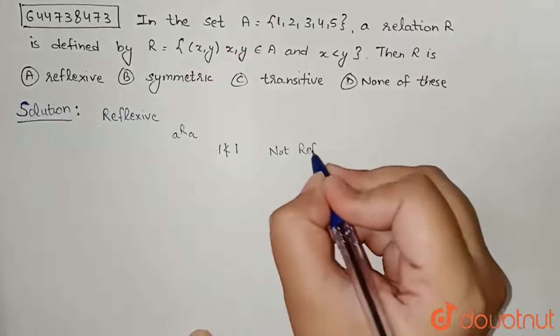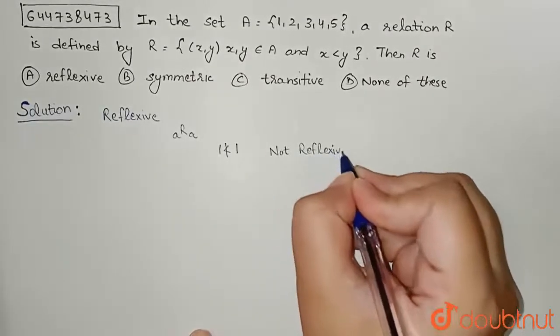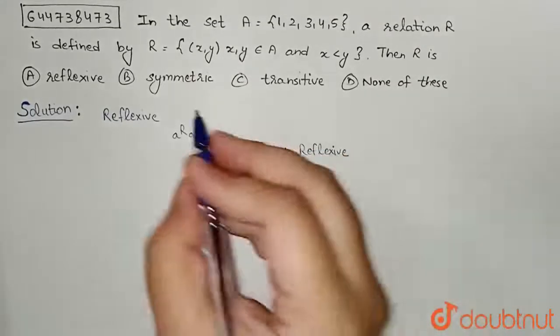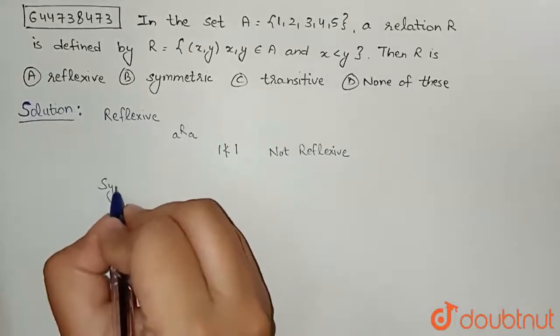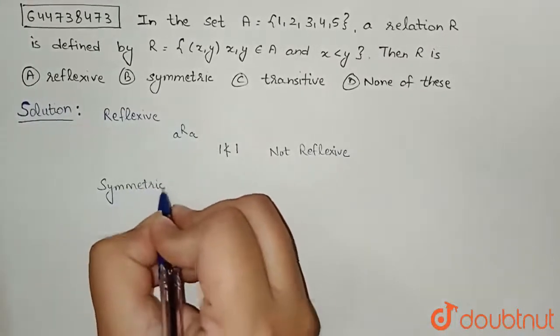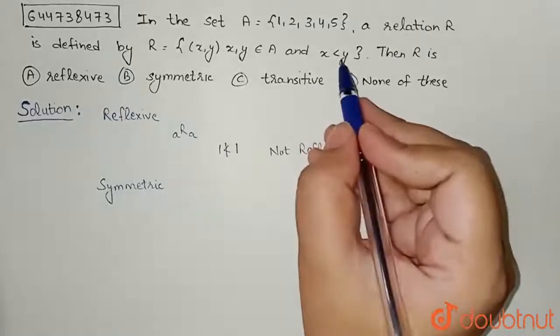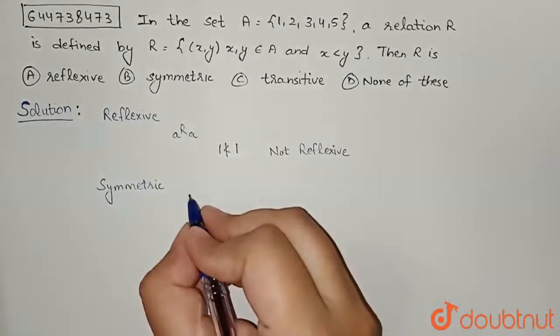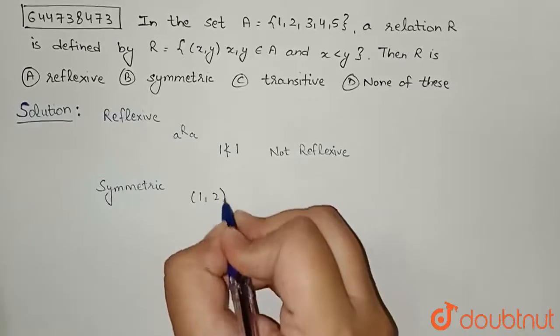Relation R in this case will not be reflexive. Now let us check for symmetric. So for symmetric, let us take the element - x less than y. So let us take (1, 2).